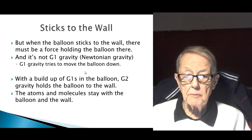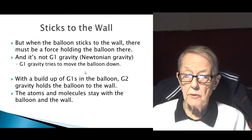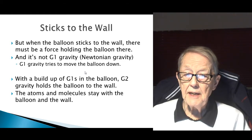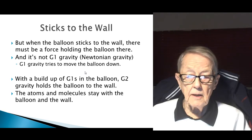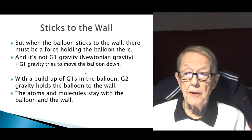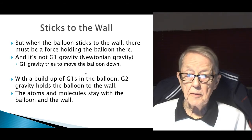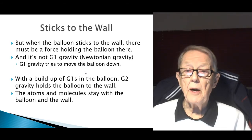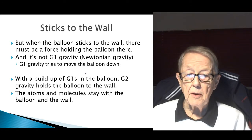With the buildup of G1s in the balloon, the G2 gravity is what holds the balloon to the wall, and notice that is a horizontal gravity. It turns out that whether it's G1 or G2, you can have gravity in all directions. Since the Earth dominates, we often think of it as only a vertical gravity, but gravity can happen horizontally.